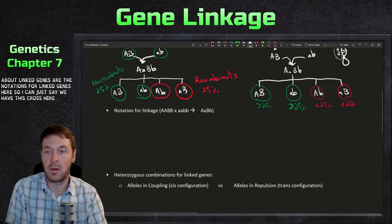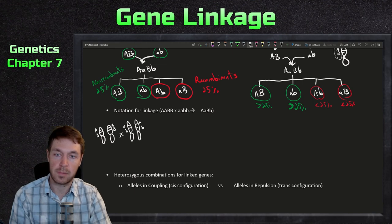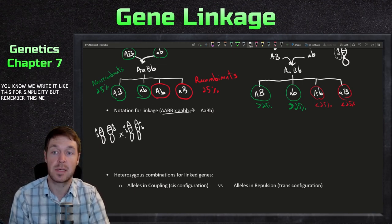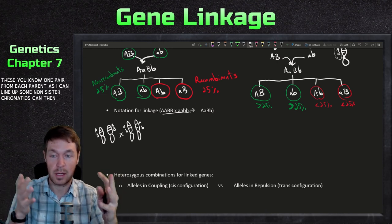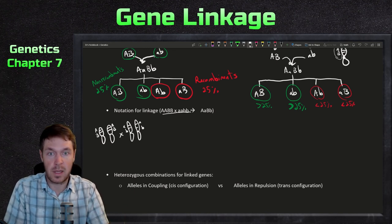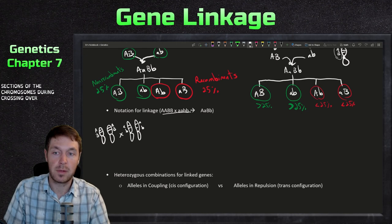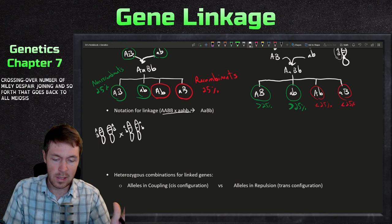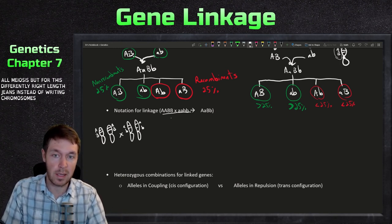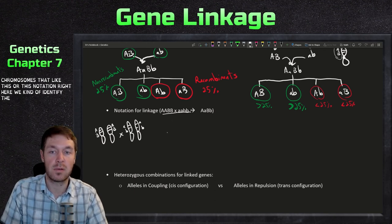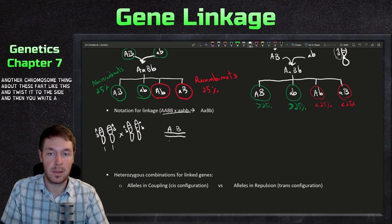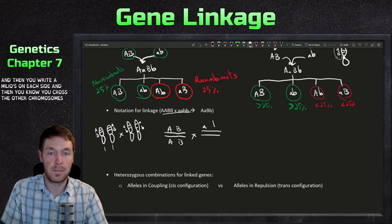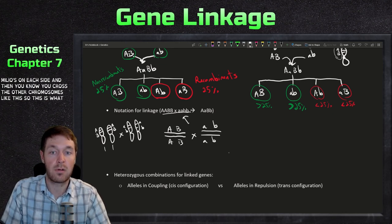Now let's go over notation for linked genes. If you draw a cross out on a chromosome, each chromosome pair forms homologous pairs. Non-sister chromatids can exchange sections during crossing over. When we write linked genes, instead of writing chromosomes out the usual way, we identify chromosomes using bars - this bar represents one chromosome and this bar another. Think of the bar twisted to the side, with the alleles written on each side of it.